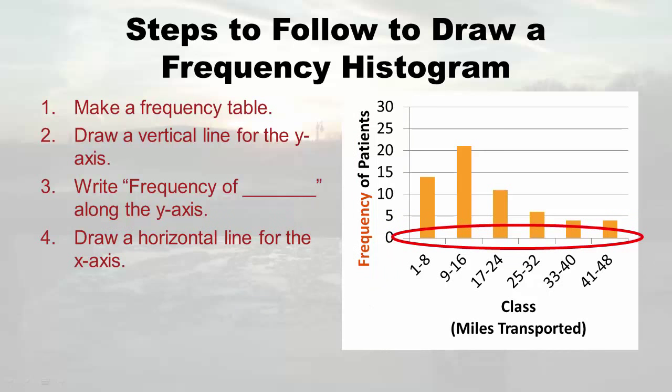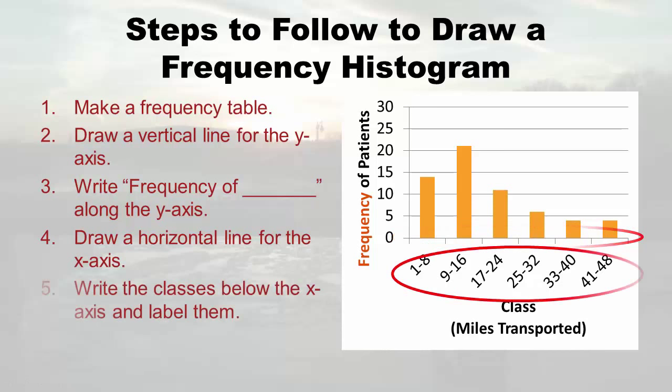Next, you draw the horizontal line for the x-axis. After that, you write the classes below — like the lowest class is one to eight, the lower class limit to the upper class limit. I get confused if I don't do the y-axis first, because then there are all these numbers and it's totally confusing. So try to do it in this order.